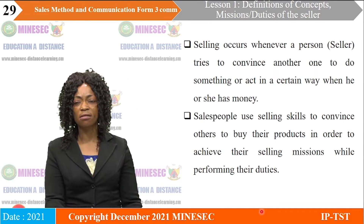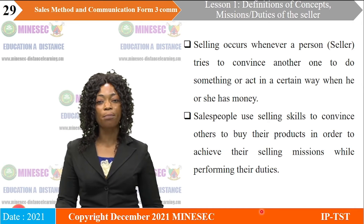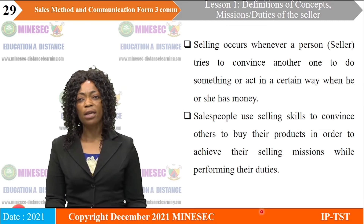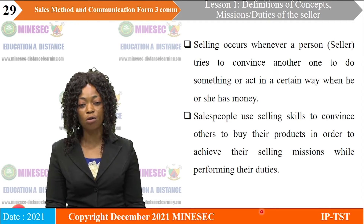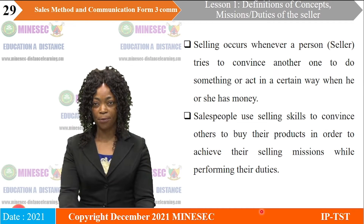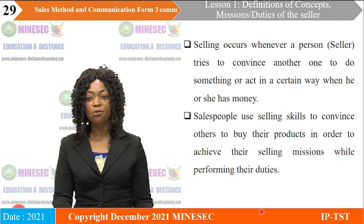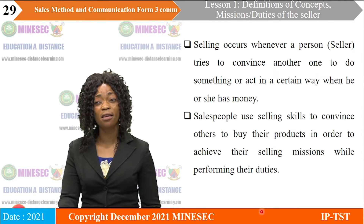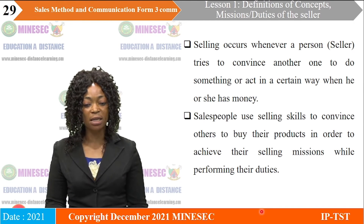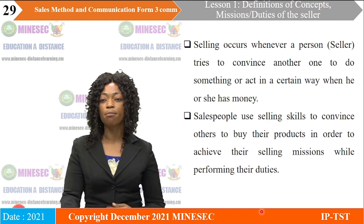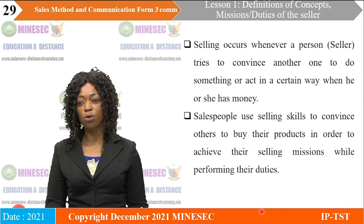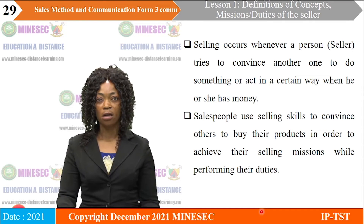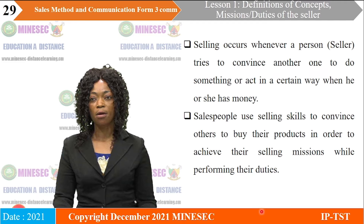Selling is when a person — that is a seller — tries to convince another person who is the customer to do something. Selling cannot be done without money. Sales people must use their selling skills to convince others to buy, in order to achieve their selling mission while performing their duties. We cannot sell without achieving our mission — if not, we are going to go out of business. So salespersons must use their selling skills so that while convincing the customer, they also make profits or achieve their objectives.